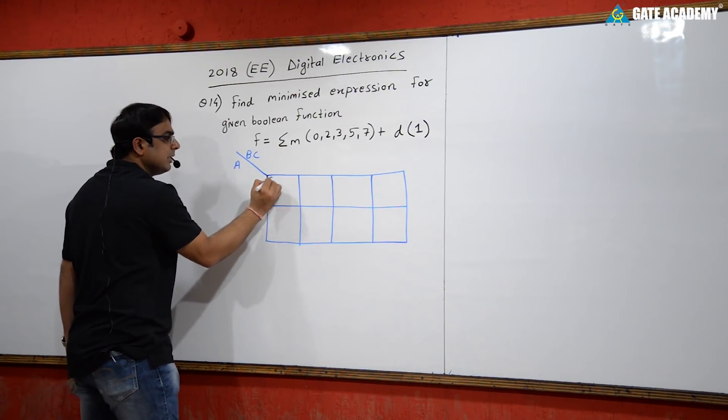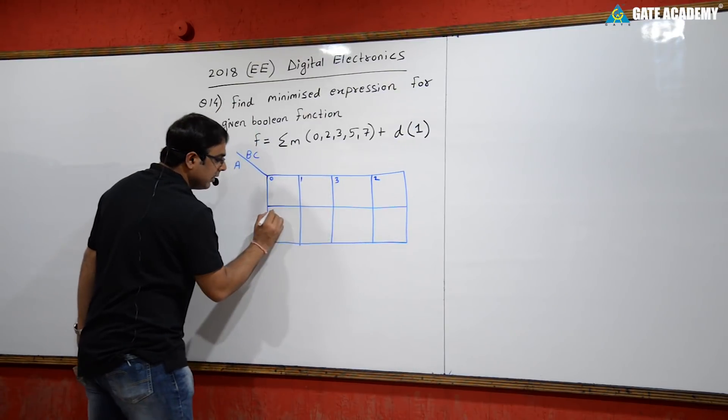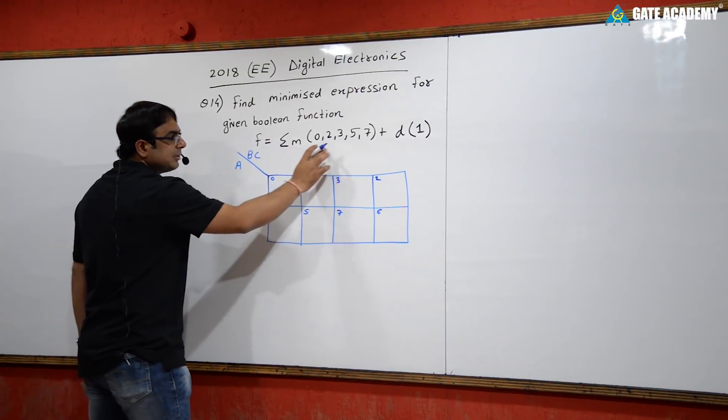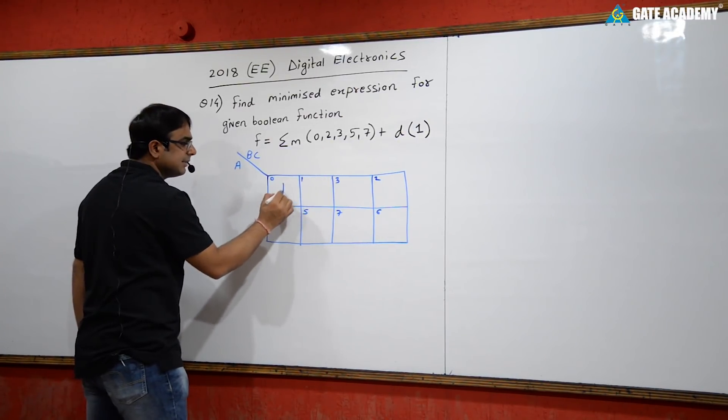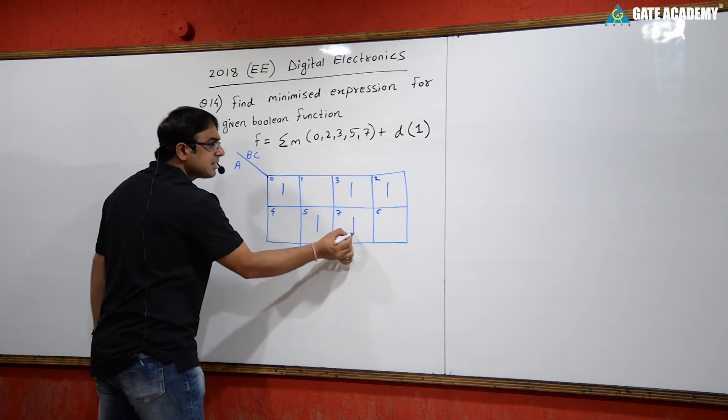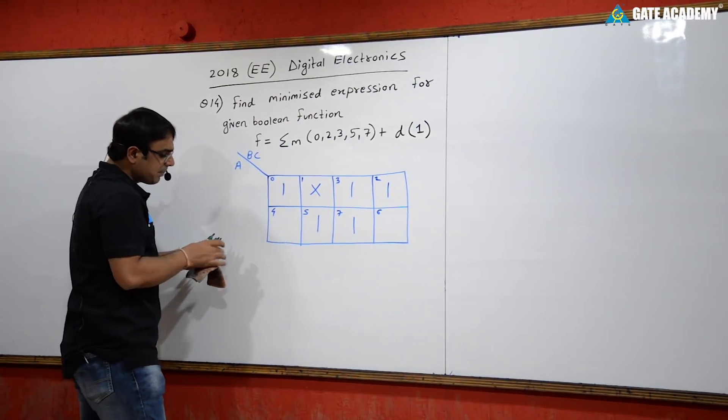The K-map cell numbers are 0, 1, 2, 3, 4, 5, 6, and 7. We place the minterms 0, 2, 3, 5, and 7 in their respective cells. The don't care is minterm 1.